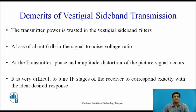The demerits of vestigial sideband transmission are: first, the transmitted power is wasted in the vestigial sideband filters; second, there is a loss of about 6 dB in the signal-to-noise voltage ratio; third, phase and amplitude distortion of the picture signal occurs at the transmitter; and fourth, it is very difficult to tune the IF stage of the receiver to correspond exactly with the ideal desired response.